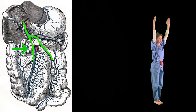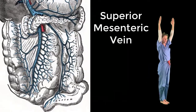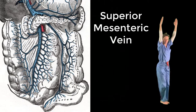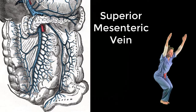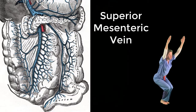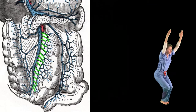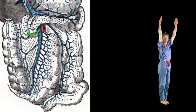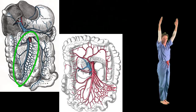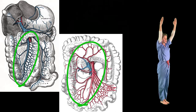The back leg of the chair is formed by the superior mesenteric vein, which drains the midgut organs including the jejunum, the ileum, the cecum, appendix, ascending colon, and most of the transverse colon. Tributaries of the superior mesenteric vein include the intestinal veins, ileocolic vein, right colic vein, and middle colic vein, matching those of the superior mesenteric artery and its branches.